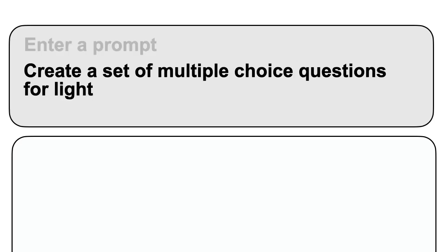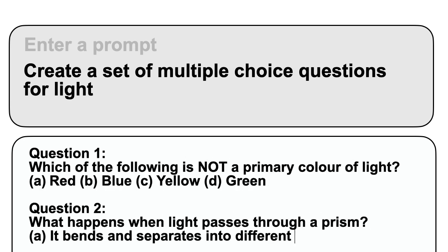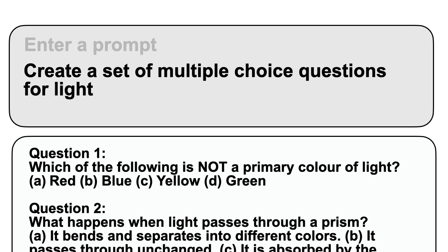Take assessment, for example. We might use generative AI to create a set of multiple-choice questions. We could enter the prompt into the AI system: 'Create a set of multiple-choice questions for light.' The AI system will then predict, based on its prior training, what output we are most likely to want. We may get a response that resembles what we're trying to create, but it may not be fit for purpose. In this example, we've given very limited detail, and therefore the AI system is predicting the outputs that we want based on the limited information in our prompt.